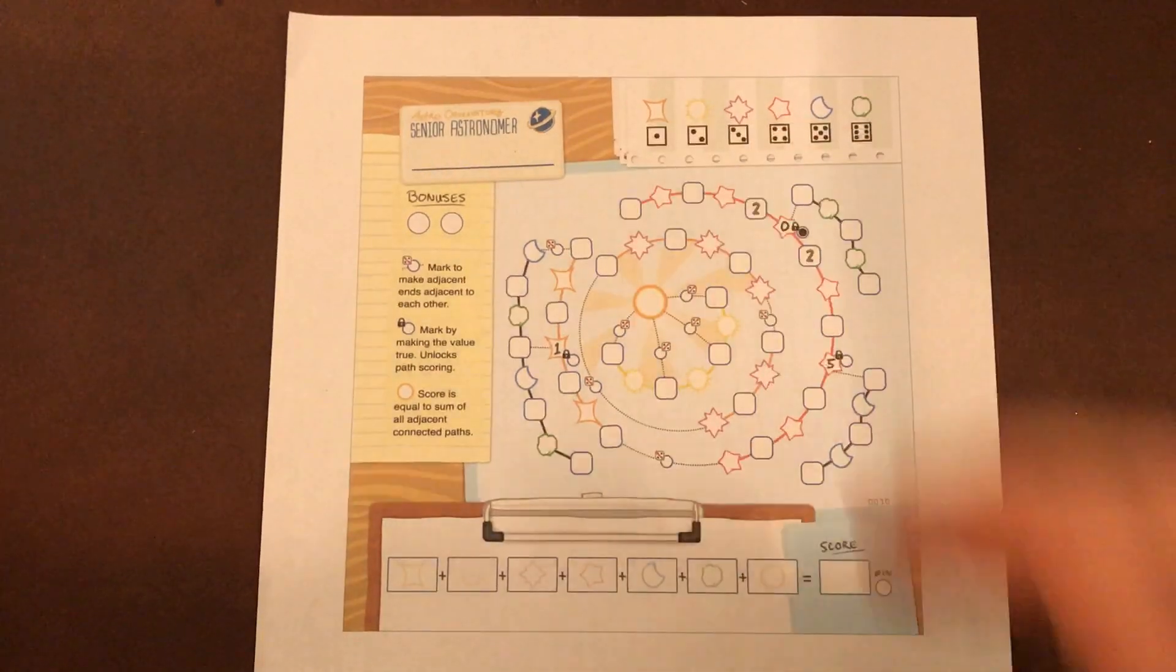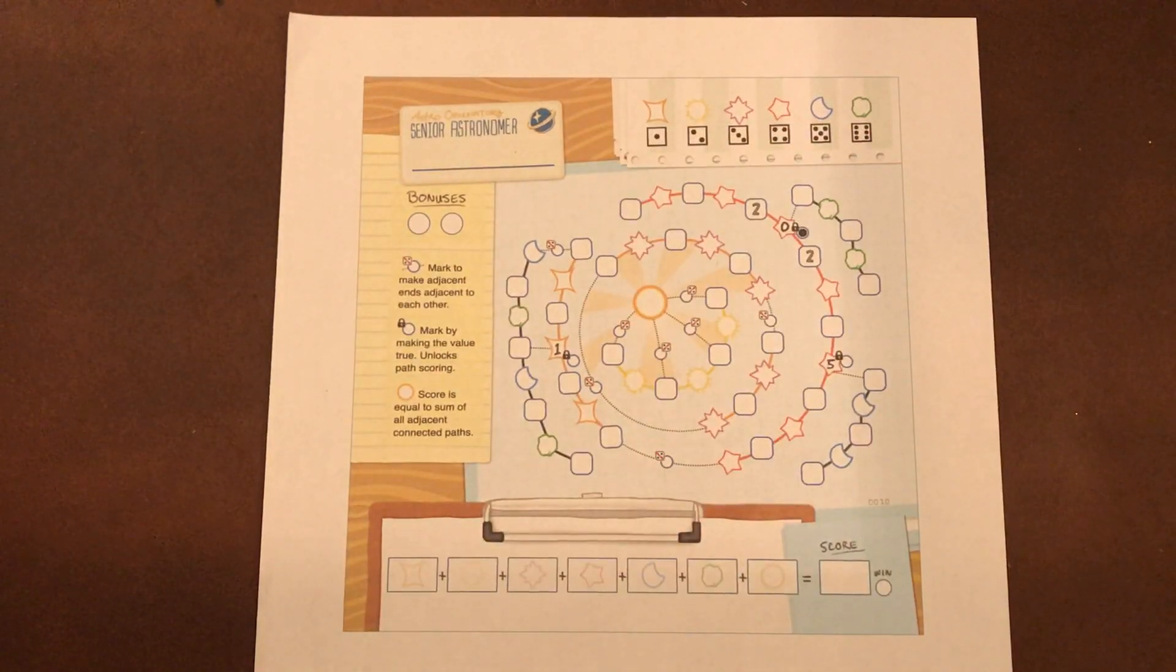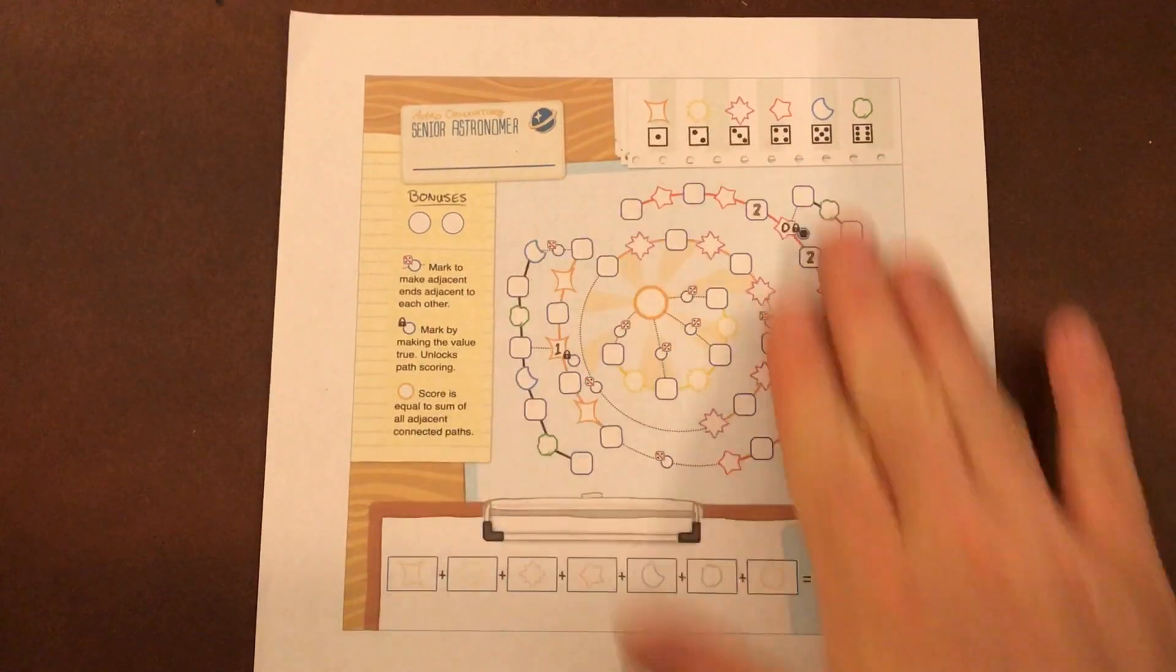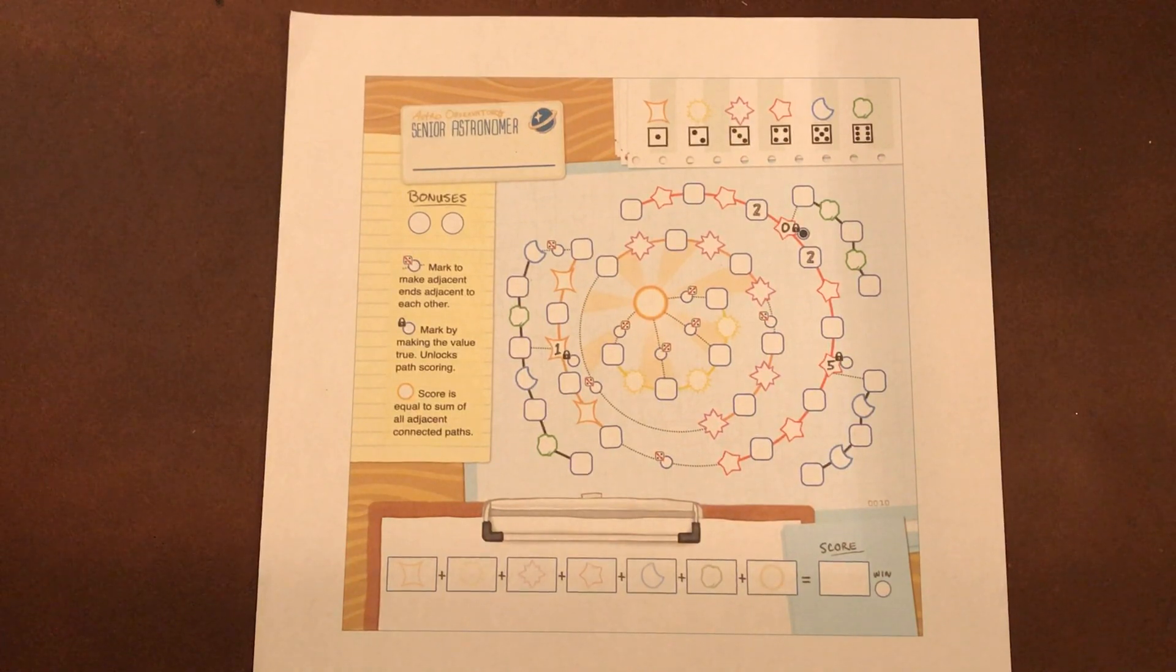Perforated pages you can tear out and play right on your sheet. It plays one to four players. What you're doing is charting the skies as astronomers, trying to fill this out as cleanly and perfectly and accurately as possible.